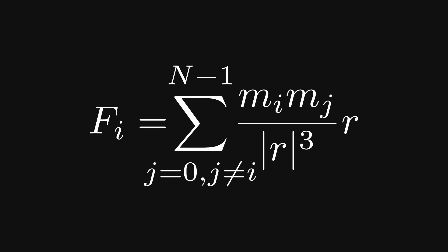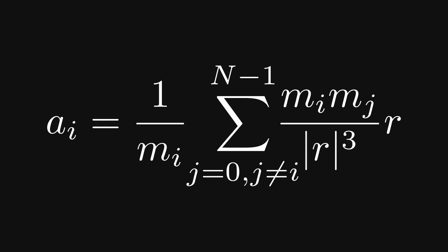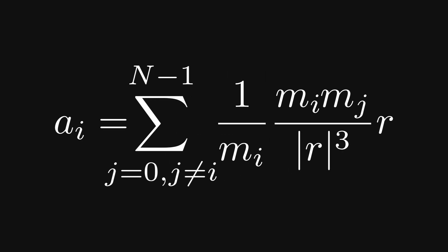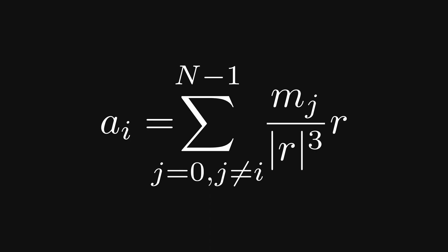To calculate the acceleration for each body, we need to divide their resulting force by their mass, giving us this expression, which we can simplify by distributing the division over the summation.